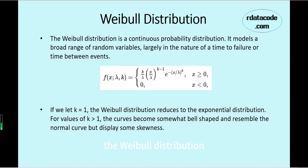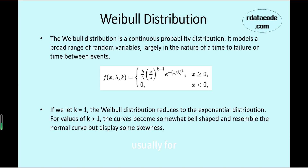Weibull distribution is a continuous probability distribution. It is used to model usually the time to failure or time between events. It is quite similar to, for example, exponential distribution.